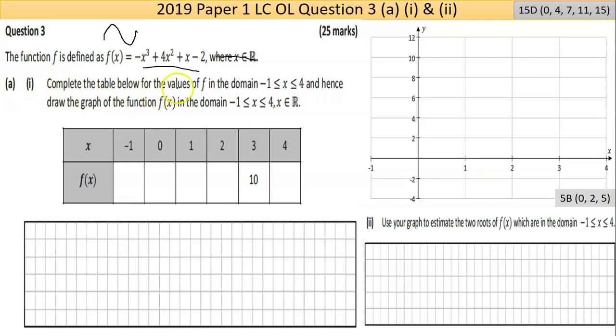Part 1 says complete the table below for the values of f in the domain, so it just tells you to use these x values between minus 1 and plus 4. I'm going to simply just assume the whole numbers. Ultimately, what they want you to do is use the x value, put it into your expression, and find out the f of x value, or for lack of a better word, the y value. It's always worth remembering that f of x is the same thing as y.